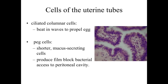The peg cells are going to be involved with secreting a mucus. That mucus is going to be important because if we trace all the way down through the uterine tubes, through the uterus, through the vagina, we're going to see that it's exposed to the outside world. These peg cells are going to be producing a film which is going to help protect against bacterial access to the peritoneal cavity, minimizing the risk of disease-causing agents from going the opposite direction as the egg, getting into the peritoneal cavity and causing an infection.